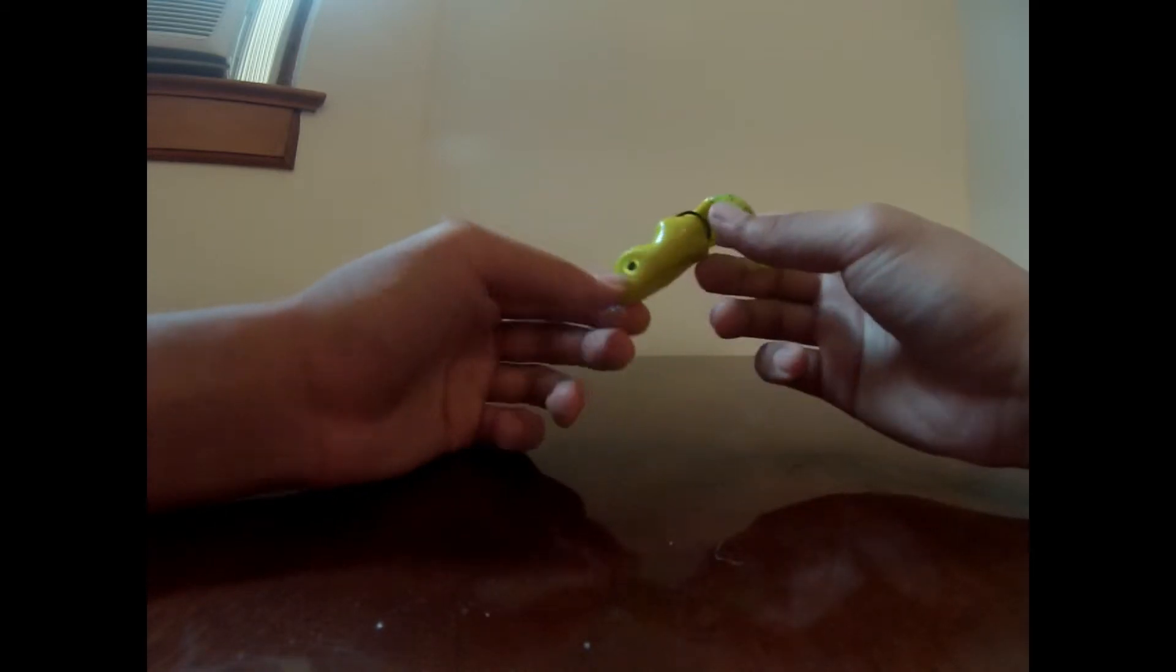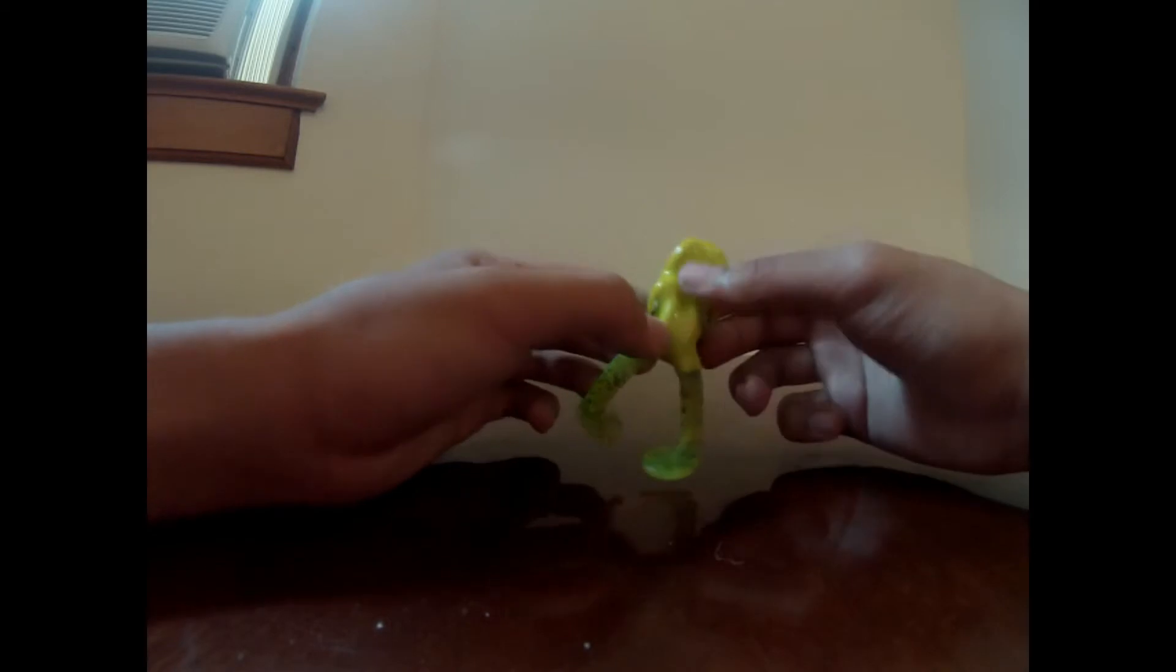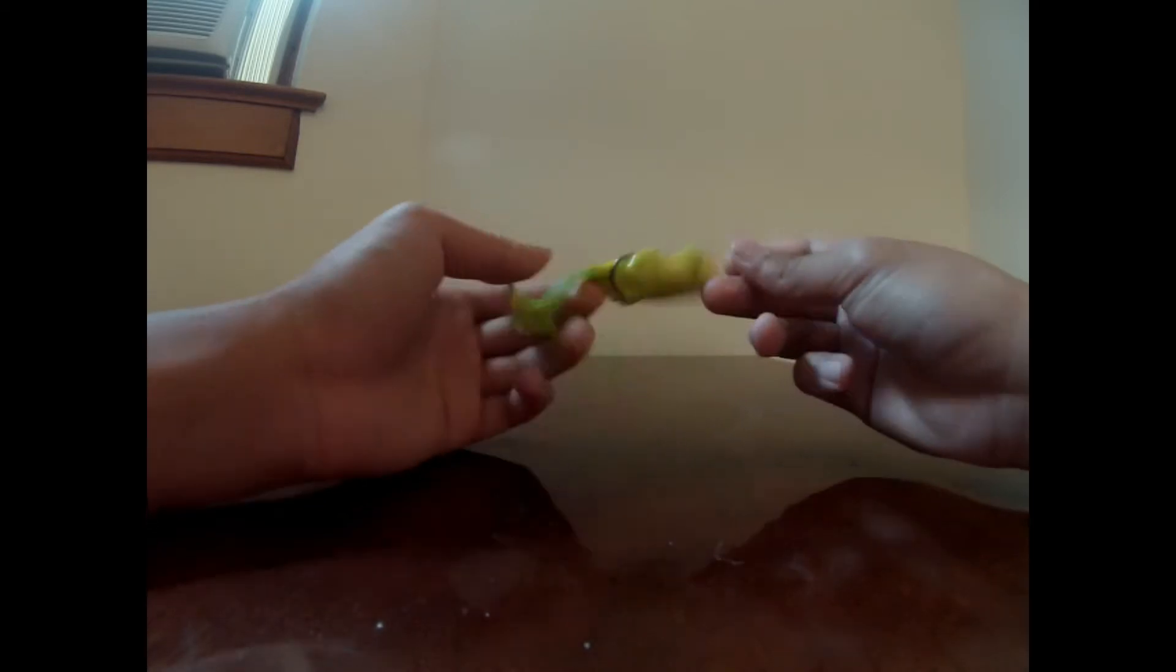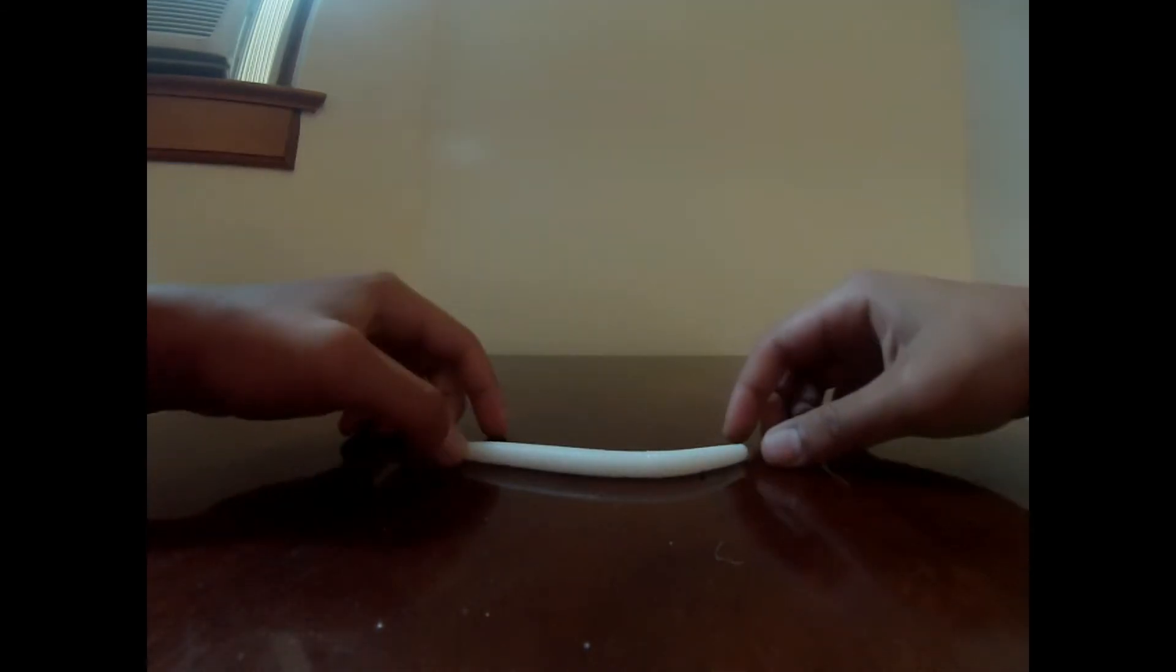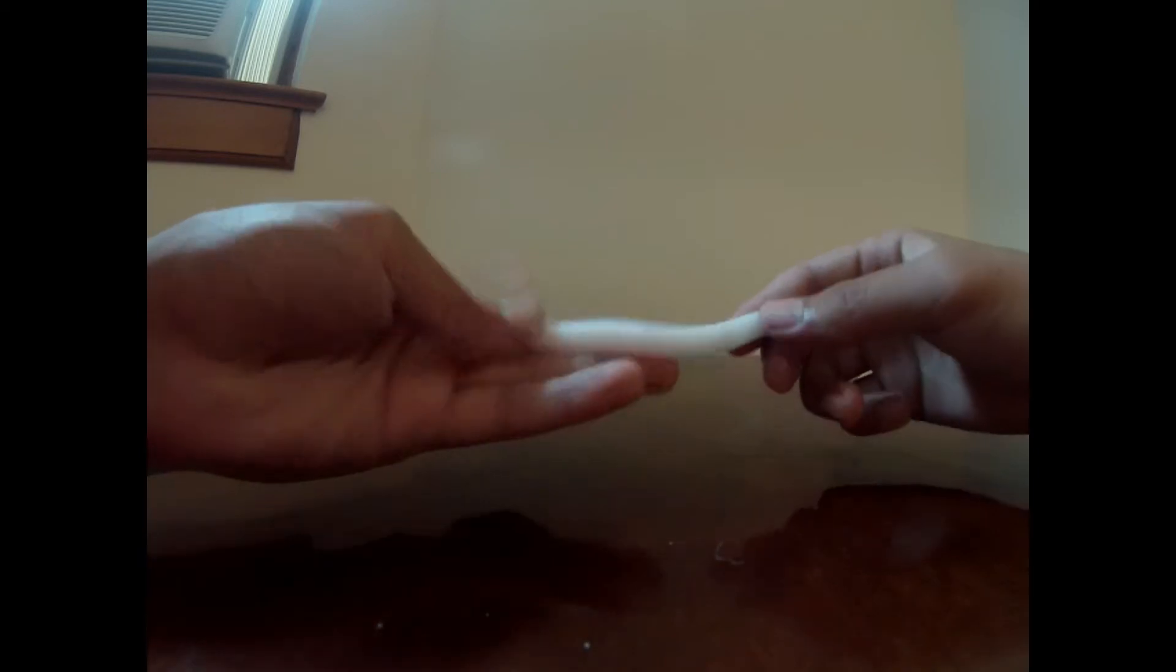And then sometimes it'll sink under the water and that's when they get it again. But yeah they'll hit it on the retrieve but 9 times out of 10 they'll hit it when it's sitting still. So my all time favorite bait is the Senko.